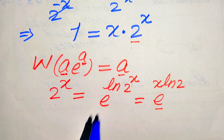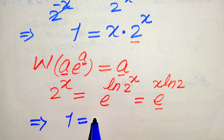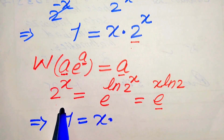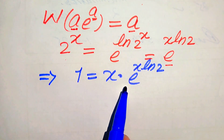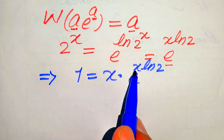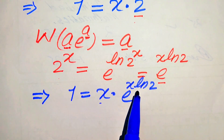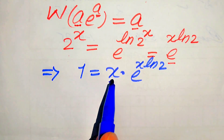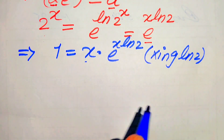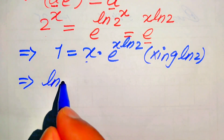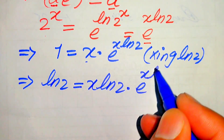After replacing this value, our equation becomes: 1 is equals to x times e to the power of x times log 2. Now, the exponent of e is x times log 2, but we need it multiplied by the same factor. So we multiply both sides by log 2, giving: log 2 is equals to x times log 2 multiplied by e to the power of x times log 2.